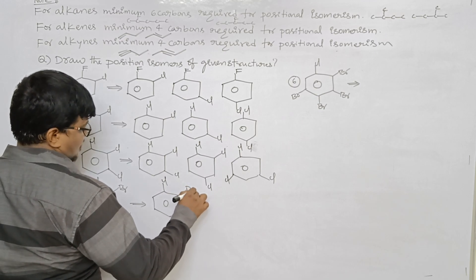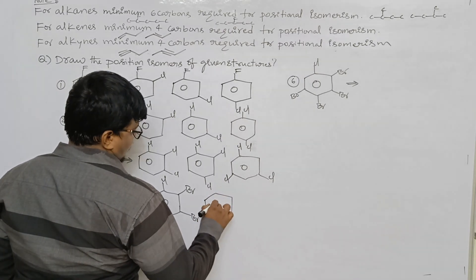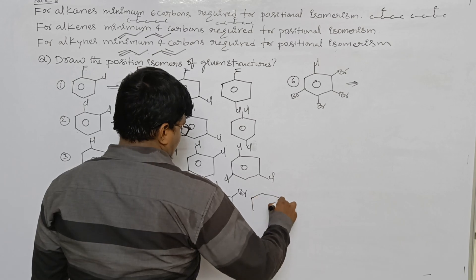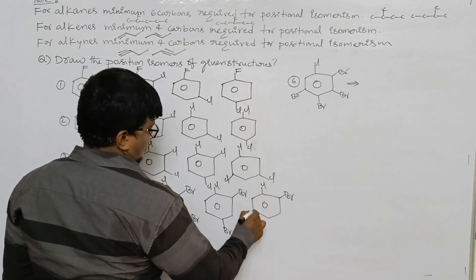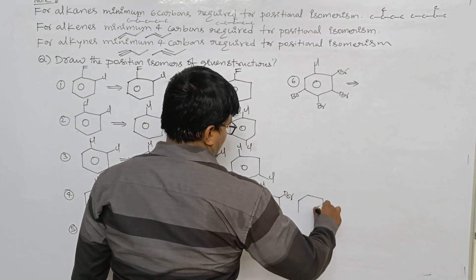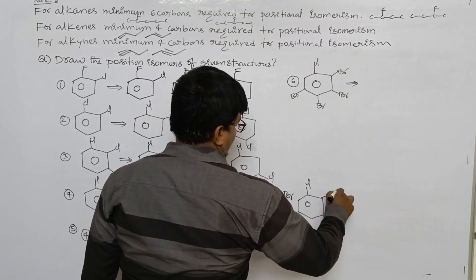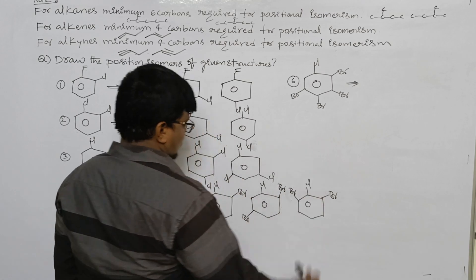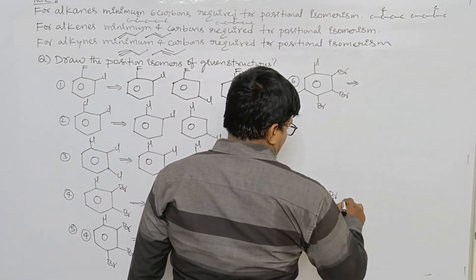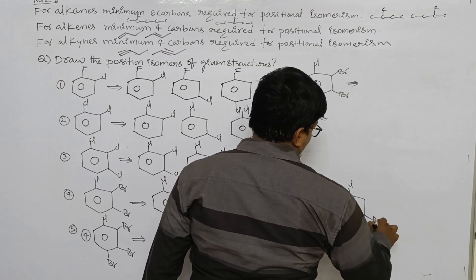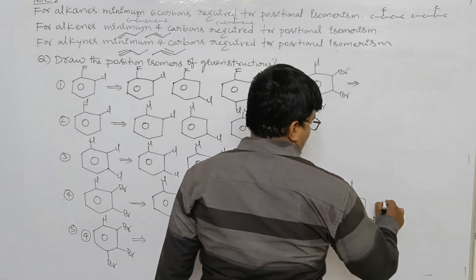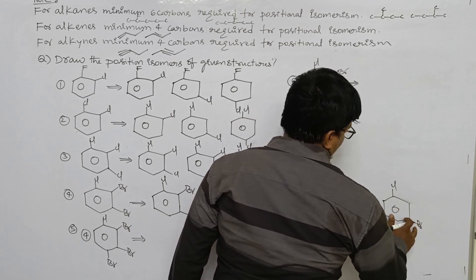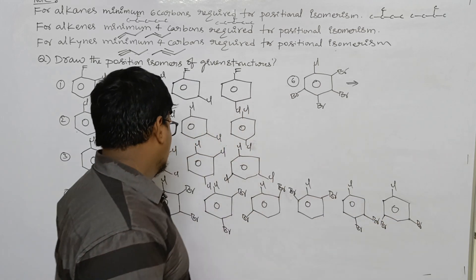For the fourth compound with chlorine and bromine substituents on benzene: chlorine and bromine at the 1,2 position; bromine at the third position; then interchange the bromine positions to get further arrangements. In total, six possibilities are present for this compound with one chlorine and two bromines on the benzene ring.